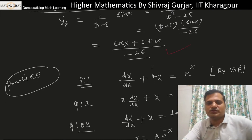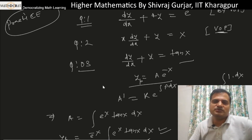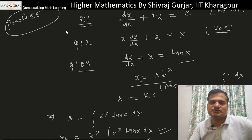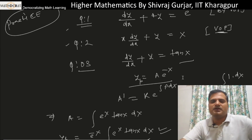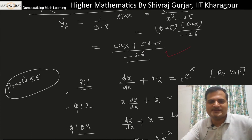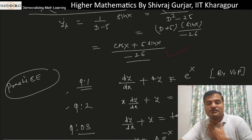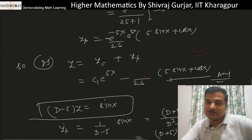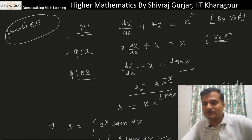Since ∫e^x · tan x dx cannot be expressed in elementary form, we leave it as is. The general solution is y = c₁·e^(−x) + e^(−x)·∫e^x · tan x dx. Now we'll move on to discuss variation of parameters for second-order differential equations.